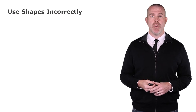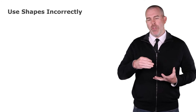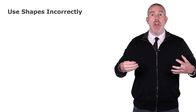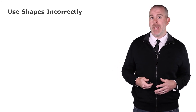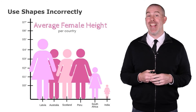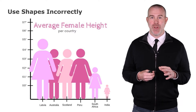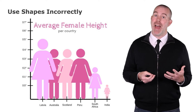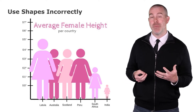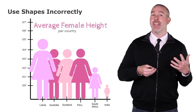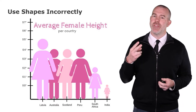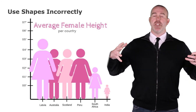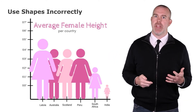The last type of misleading graph involves using shapes incorrectly. When you make a shape taller, it stretches wider as well — make it twice as tall and, looking at area, it looks four times as big. This first example is a classic: average heights of women by country. The smallest are from India and the tallest from Latvia, but the shapes stretch proportionally in both dimensions, so you'd have pygmy women in India and giants in Latvia. The scale also doesn't start at zero, compounding the problem.